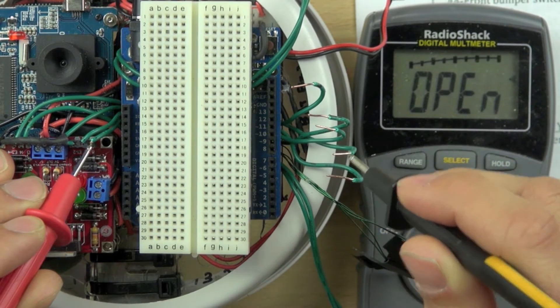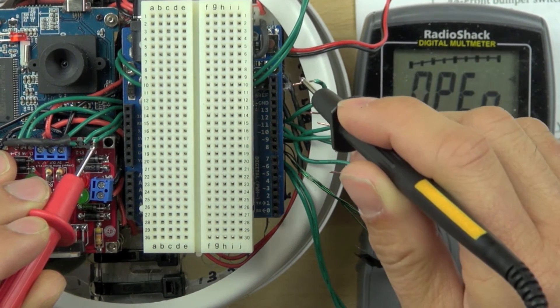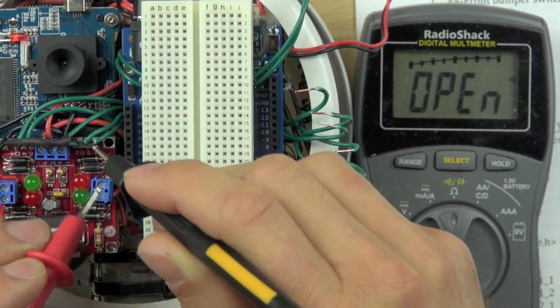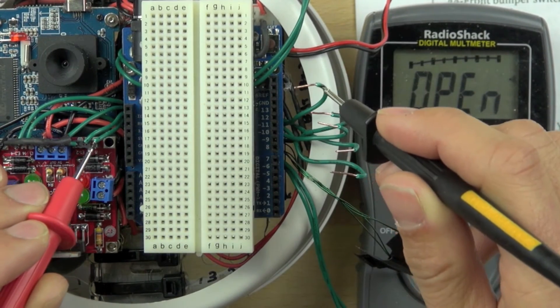When we don't hear a beep, that means it's not the same wire. But when we do, that means that wire is continuous.